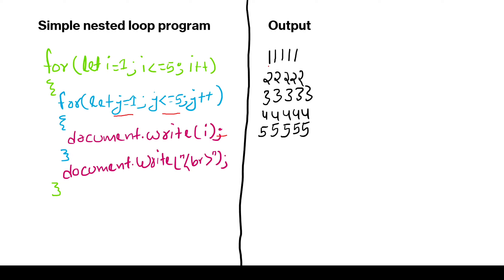Like here, you can see i equals to 1. You can clearly see the first time it is 1 — it prints 1, and after that it increments j, then checks condition, then prints i — i is still 1. So 1 is printed, and this goes till j equals to 5. After that, if j is 6, this loop is terminated.